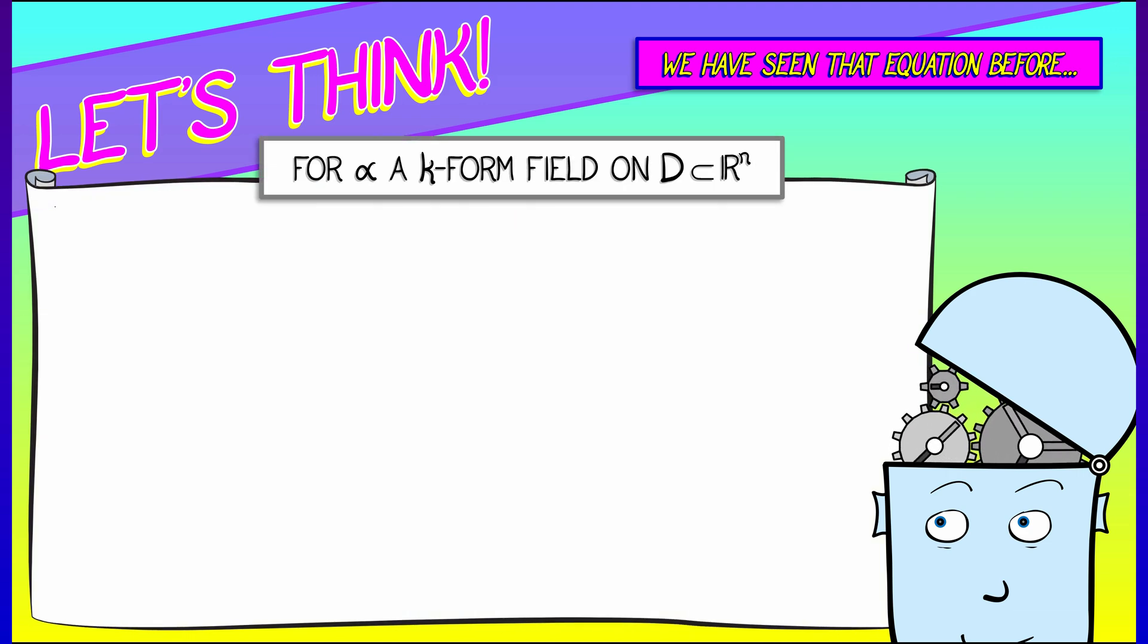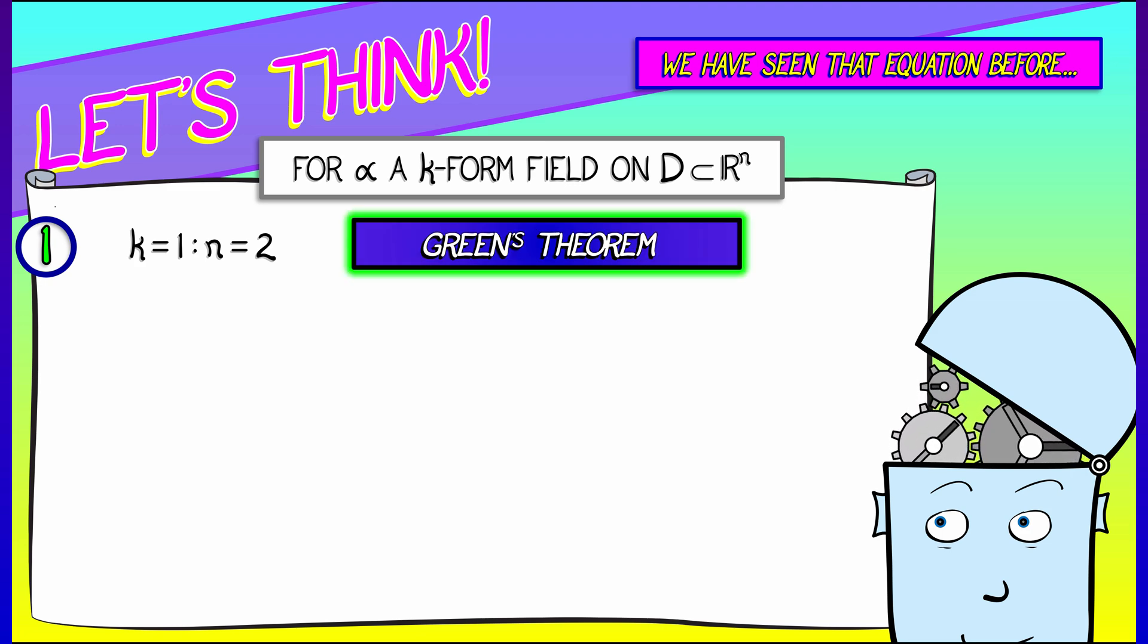Let's think about it. Let's say that alpha is a k-form field on a domain in R^n. Then in the special case where k equals 1 and n equals 2, what do we have? We have Green's Theorem, right?